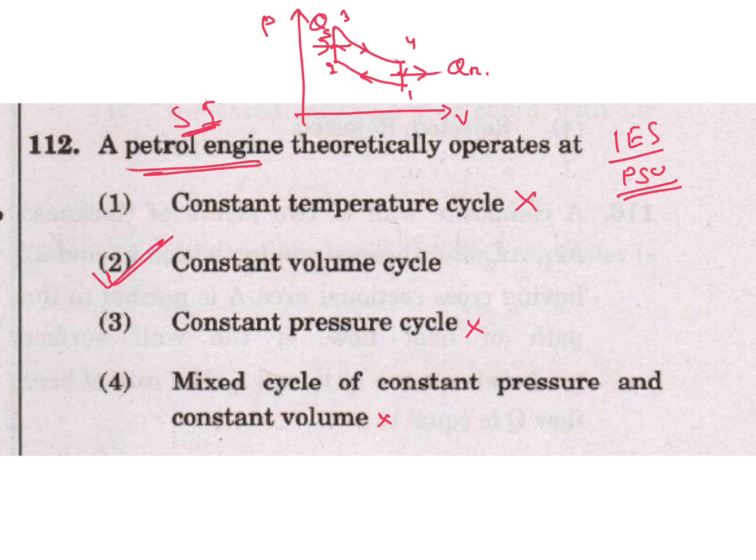Constant volume heat addition Q supplied and here Q rejected. In TS diagram: this is 1 to 2, then 2 to 3, 3 to 4, 4 to 1. 2 to 3 is constant volume and 4 to 1 is constant volume process.